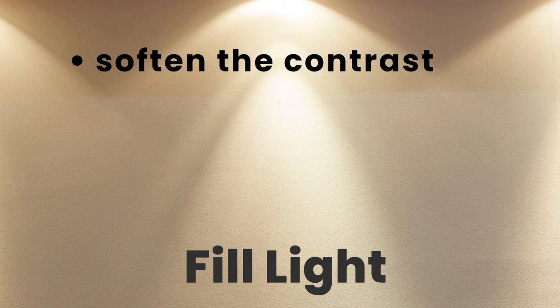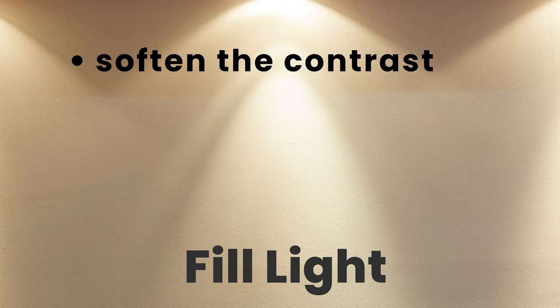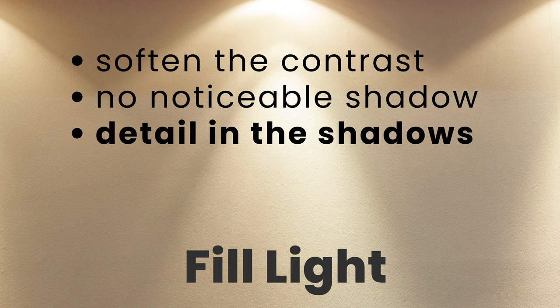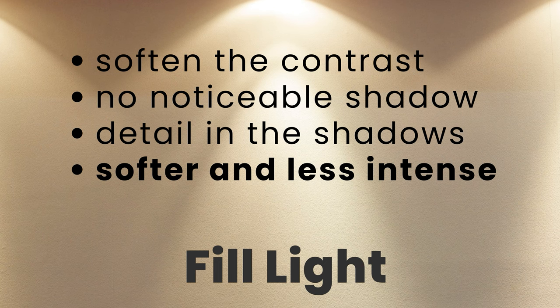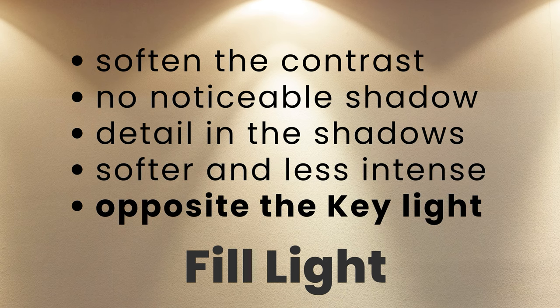When it comes to the fill light, its main purpose is to soften the contrast between your highlights and your shadows. The fill light is not supposed to be creating its own shadows. It provides detail in the darker areas of your scene, making it more visually readable, and it reduces the harshness that comes with high contrast between highlights and shadows. Your fill light should be softer and less intense than your key light, and is generally placed on the opposite side of your key light at a lower intensity.